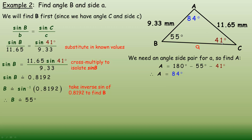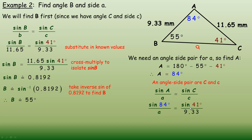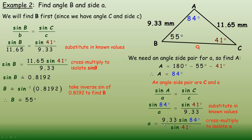Now we have two angle-side pairs: the C pair and the B pair. I'll use the C pair, but you could use B. To find side A, write sine A over A equals sine C over C. Substituting: angle A is 84, angle C is 41, and side C is 9.33. Cross-multiplying to isolate A: A equals 9.33 times sine 84 divided by sine 41.